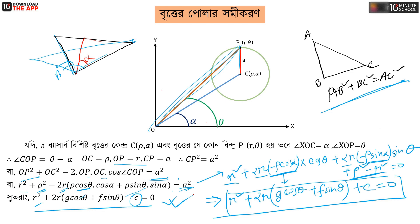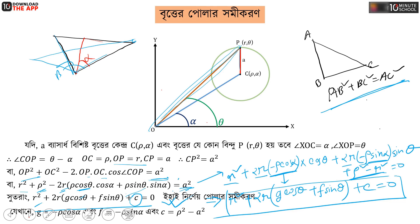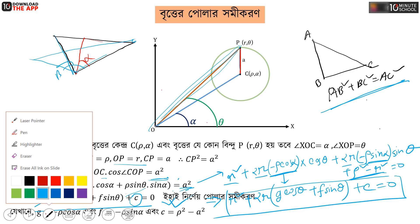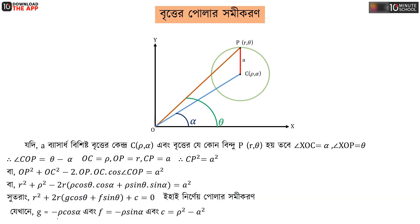There is a lot of difference at the polar level, but what will be the difference when we see it in future — we are going to look at this value. The factor g equals minus 1. Here g equals minus rho·cosα, and f equals minus rho·sinα.